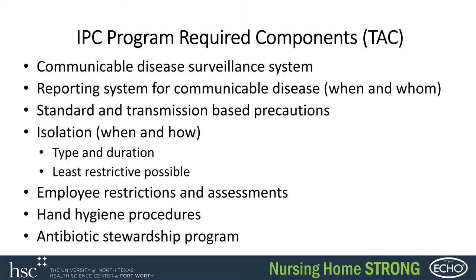The program requirements per TAC include: a communicable disease surveillance system to identify any communicable diseases going on in your facility among residents, staff, or anybody in contact with the facility; a reporting system for communicable diseases — who to report to, when, and the timeliness of reporting; standard and transmission-based precautions; and when and how someone would be placed into isolation.